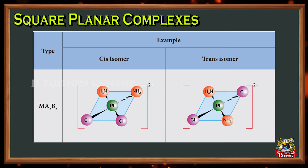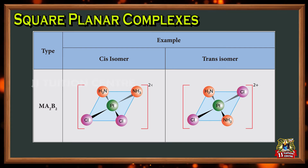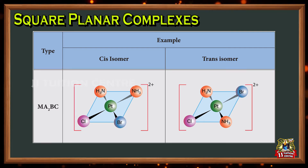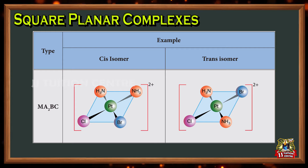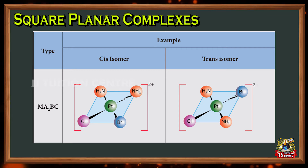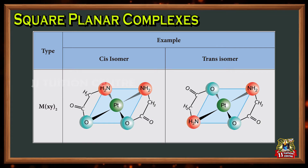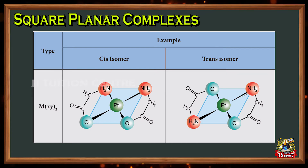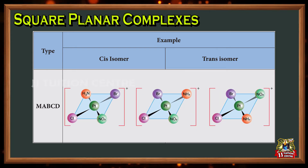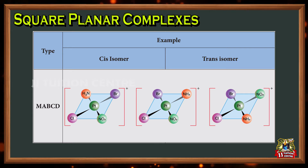Look at these examples. For MA₂B₂: in the cis isomer, the ammonia and chlorine are on the same side; in the trans isomer, they are on opposite sides. For MA₂BC: the two ammonia ligands are on the same side, but chlorine and bromine are different; in the trans isomer, ammonia is on the opposite side. For M(XY)₂: ammonia is on opposite sides in trans and same side in cis. For the last type MABCD, all four ligands are different, giving rise to three different types of isomers.